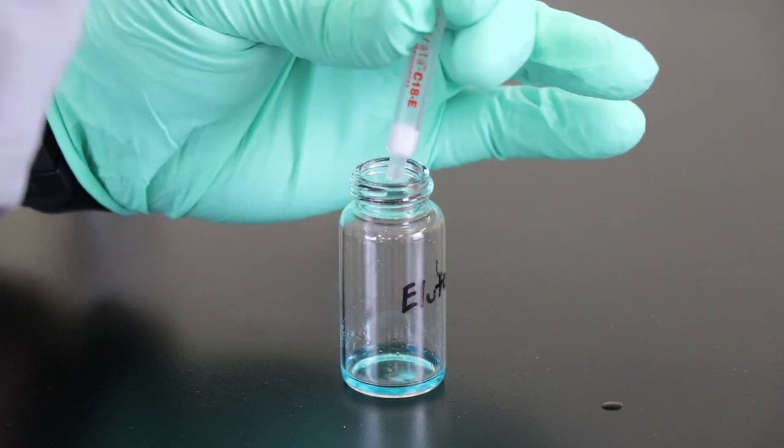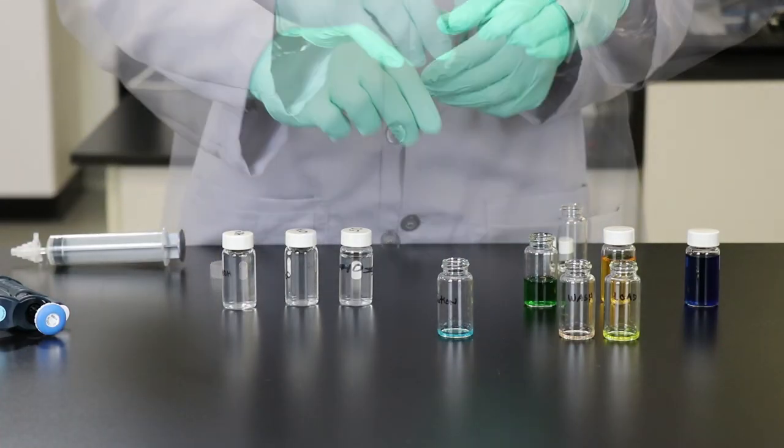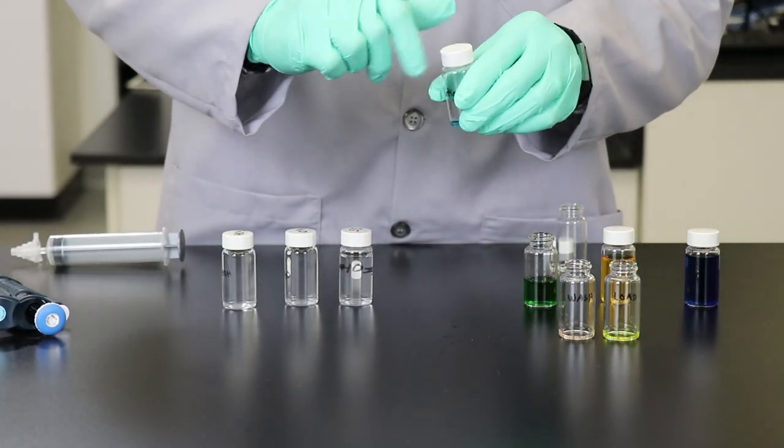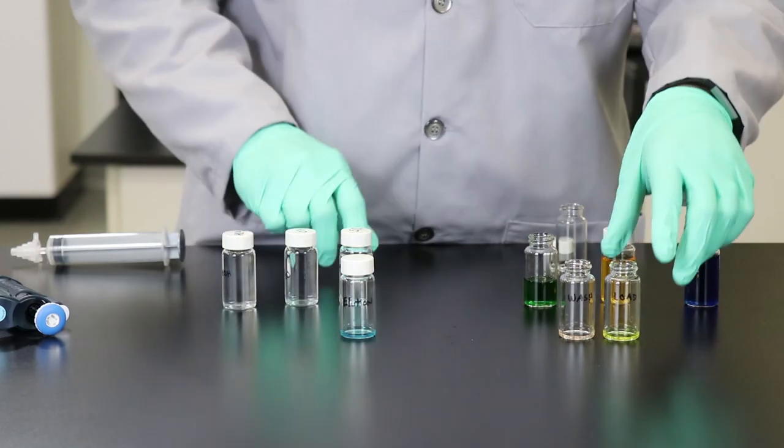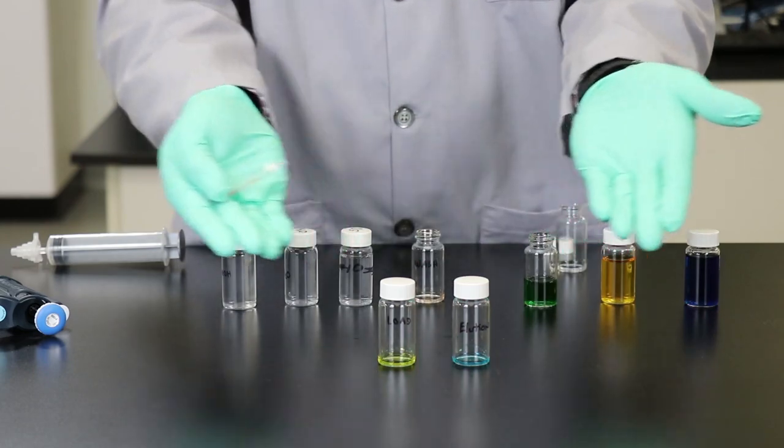So there we go, we have fractionated out the blue dye away from the yellow dye, and then also found out that there was a little bit of red dye that was present in the initial starting condition. And there's that wash solvent in the back. Voila!